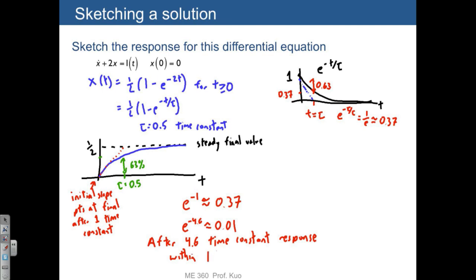So it's within 1% of the final value. So these are two helpful things to know about exponentials, that after one time constant, you're at 37%. After 4.6 time constants, you're about at 1%.